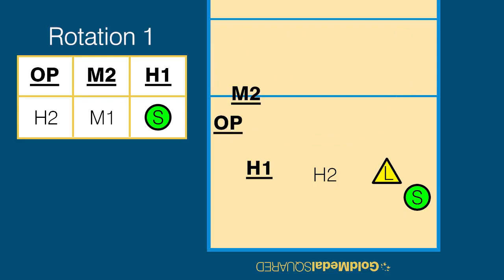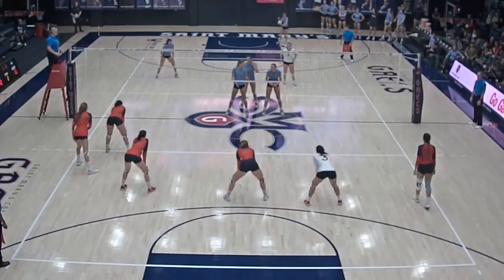When looking at these overlap rules, the formation is legal but it's important to remember that the setter still has to be behind the H1 even though they are across the court from each other. The M2 must be to the left of the H1 and the opposite must be to the left of the M2. So all three of these players along the left sideline need to be aware of that. Here is what a stack formation looks like.